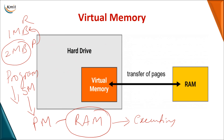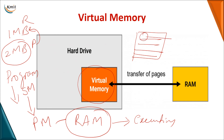Instead of storing the total program in RAM, we use a part of secondary memory to store the program there, and whenever required we transfer only the needed pages into RAM. The given program is divided into parts depending on page size, and each part is called a page. So instead of dumping all pages into memory we load only the required pages. To the user it appears — even though physical memory is 1MB and the program is 2MB — that the program can execute.